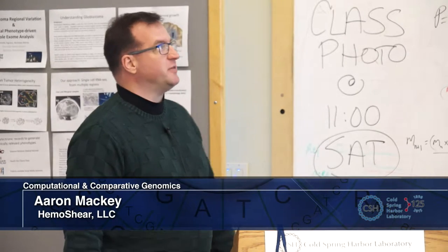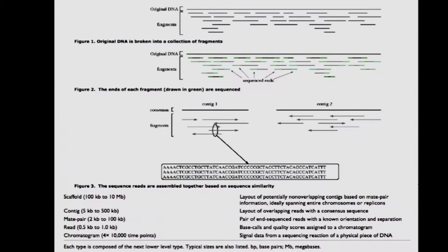The fundamental problem of genome assembly is this issue where we're only getting short sequences — whether it's Sanger sequencing or Illumina reads or 454. The fact is there's some original DNA sequence that you don't get to know about. All you get to know are these little short fragments, and you need to somehow align them, overlap them, and generate a contiguous consensus sequence of those overlapping reads, which we call contigs.